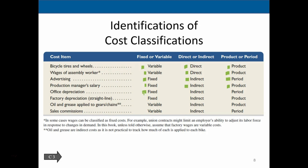Office depreciation is fixed because depreciation on the office is the same no matter how many units we produce. It's indirect because it could span multiple departments. And it's a period cost because it's on the office, not the factory. Factory depreciation, on the other hand, is still fixed and still indirect — we can't apply it to a direct production process — but it will be part of the product because it is part of the production process. We can't tie it to any individual bike, but we want to include it in the cost of inventory, as opposed to office depreciation which we expense as a period cost.